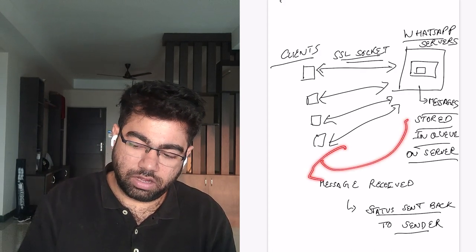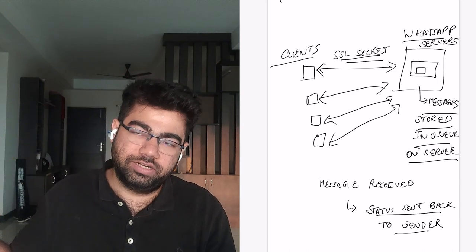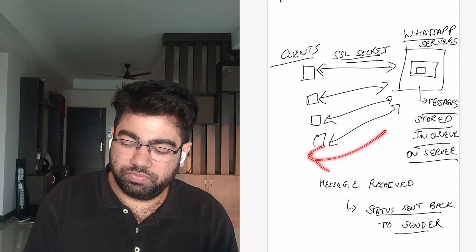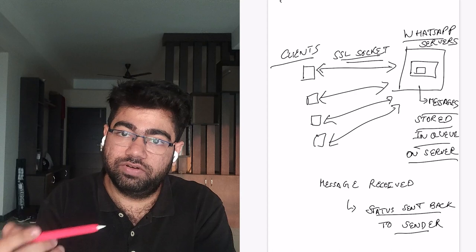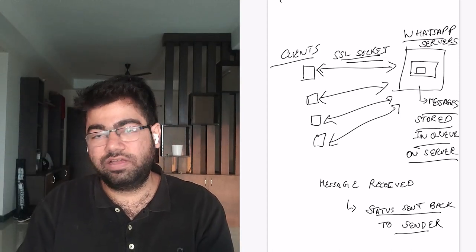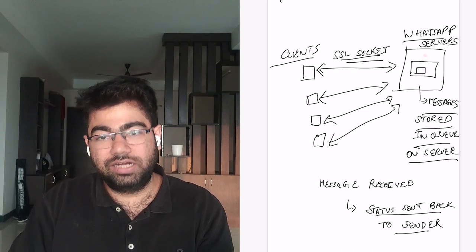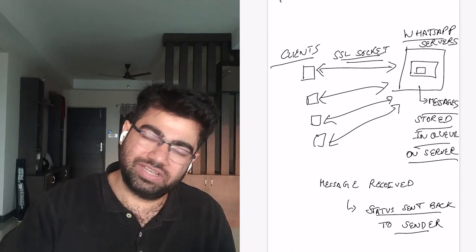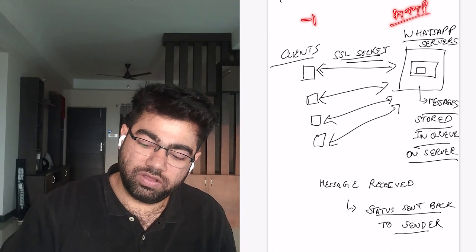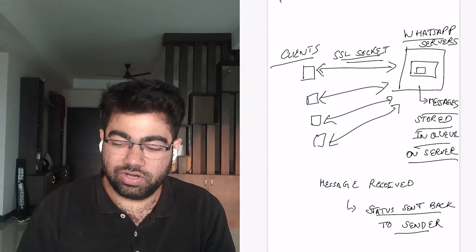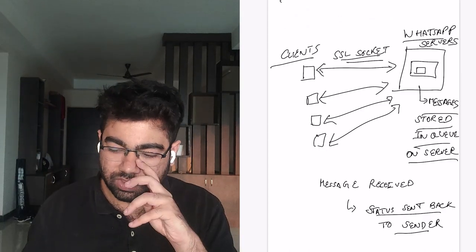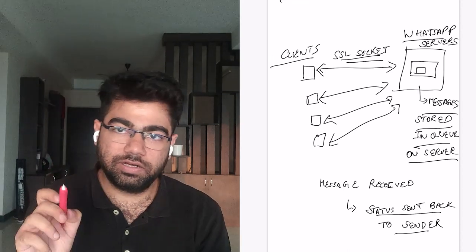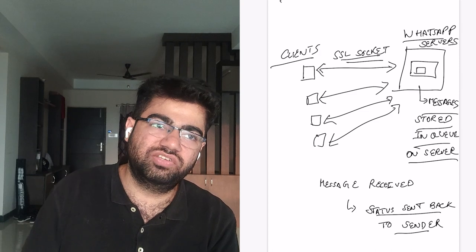When the WhatsApp server delivers the message to the intended recipient — which is itself a complex topic we'll address shortly — it sends back a status message and the blue tick appears. This illustrates two-way communication: the server can push messages to the client, and the client can push messages to the server. In contrast, with HTTP only the client makes a call and gets a response; the server cannot initiate a call to the client.